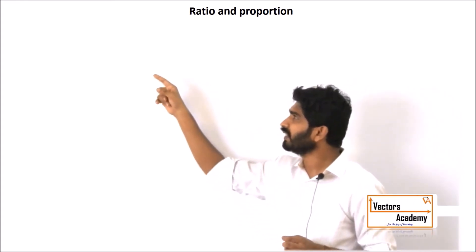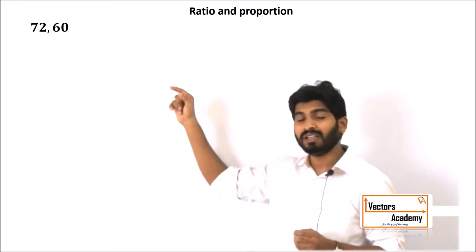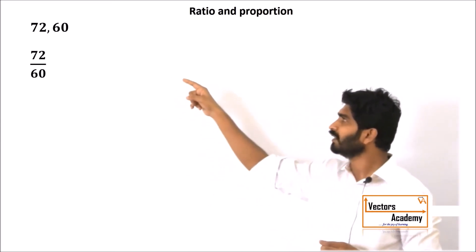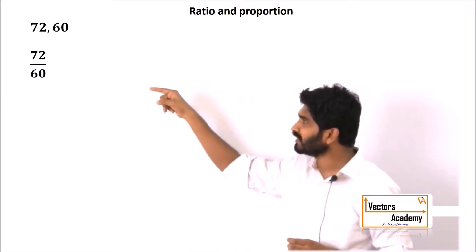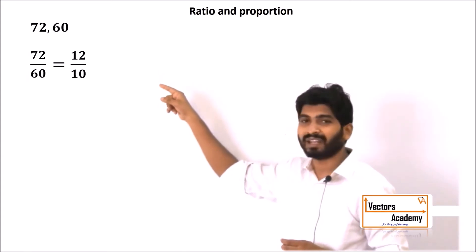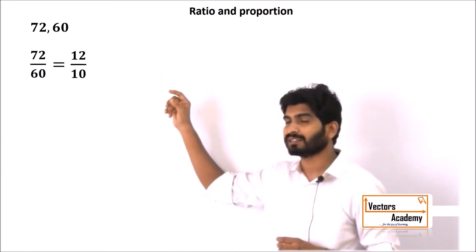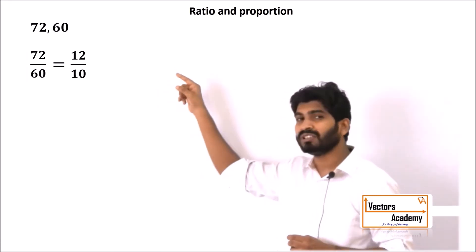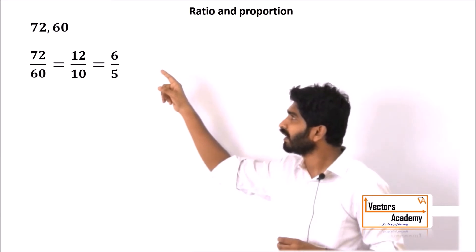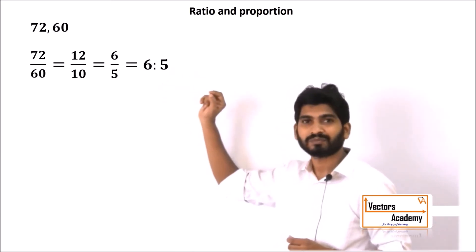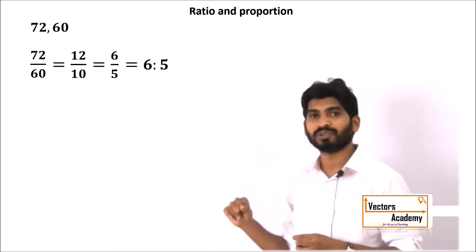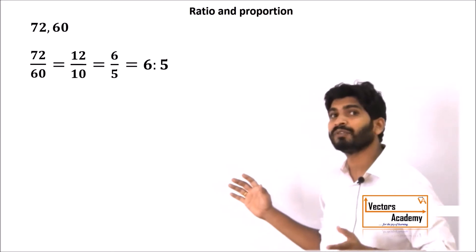For example, take the numbers 72 and 60. To find the ratio, write it as 72 upon 60. Both are divisible by 6, giving 12 upon 10. Since both are still divisible by 2, reduce further to get 6 upon 5. So 6 is to 5 is the ratio of those two numbers.